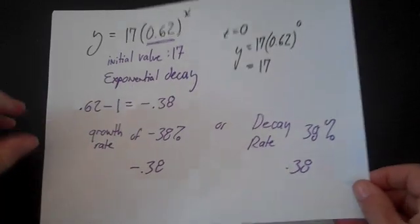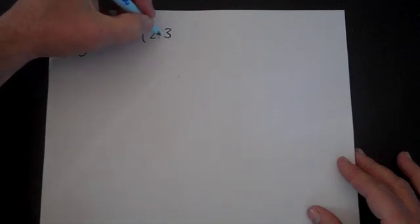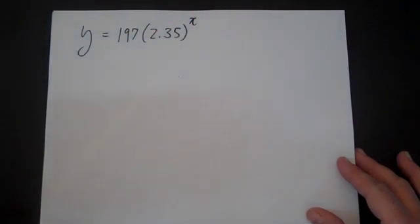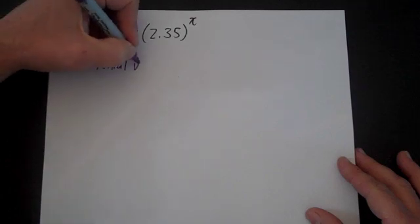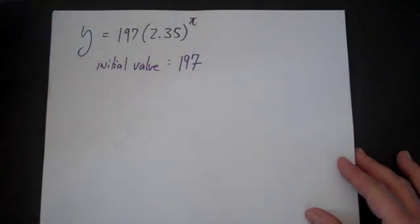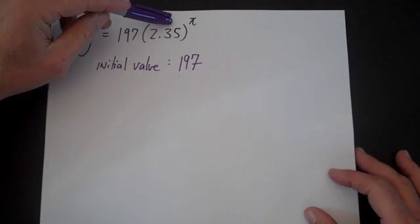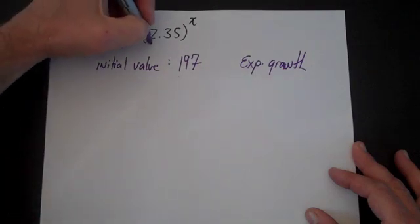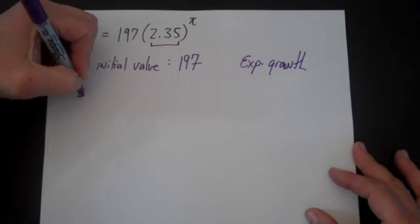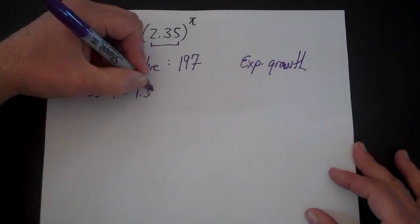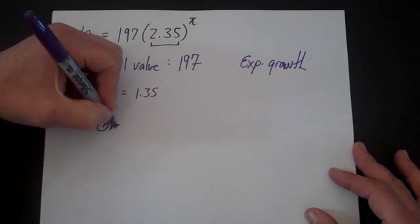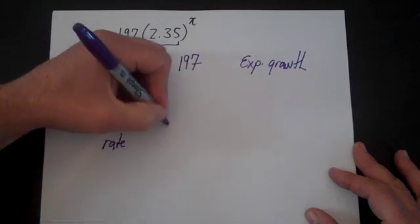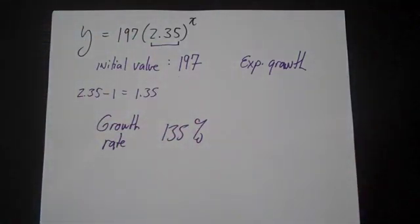Let's do one more quick example: y is equal to 197 times 2.35 to the x. The initial value is 197. Growth or decay — is 2.35 greater than 1? It is, so it's exponential growth. Now the growth rate is the difference of this number from 1: 2.35 minus 1 equals 1.35. So it's a growth rate of 1.35, or in percentage terms, a growth rate of 135%. And that covers exponential growth and decay problems.